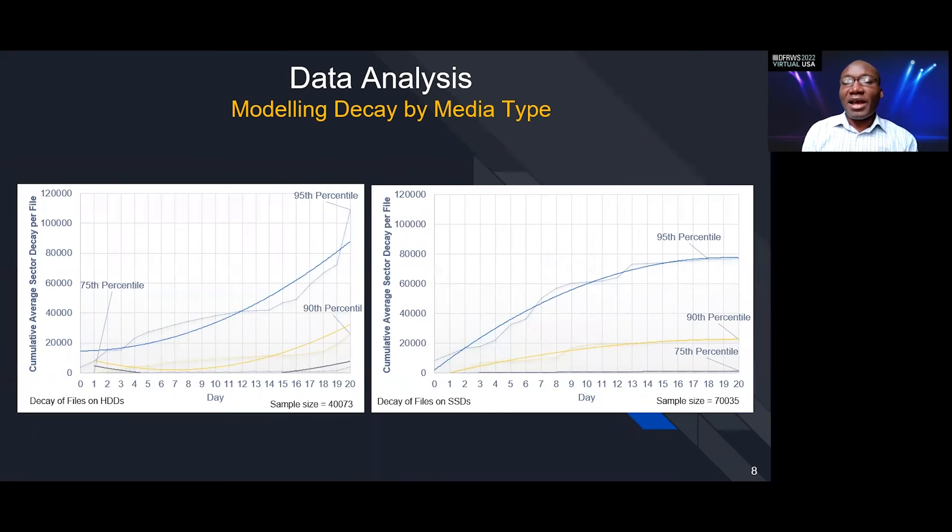We also looked at the patterns exhibited by files on hard disk drive versus files on solid state drive. Here we see that hard disk drives decay slowly at the beginning and gradually rise. But solid state drives decay quite rapidly. This is consistent with what we know about how files decay on both types of media.